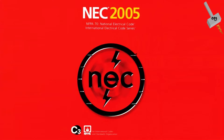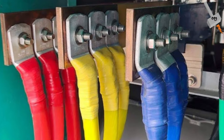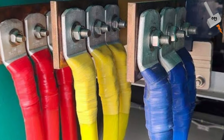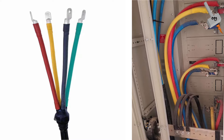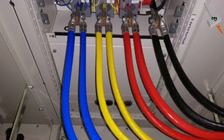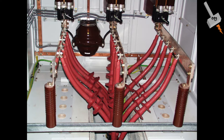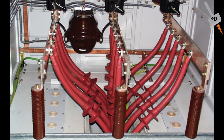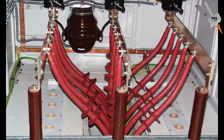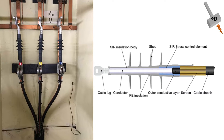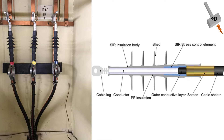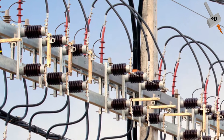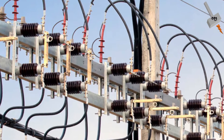The National Electrical Code standard only allows non-shielded cables for voltages less than 2000V, and with some listed exceptions, they can be used up to 2400V. Applications above 2400V should use shielded cables, which means cable terminations are required for all cables applied at voltages above 2000 or 2400V.